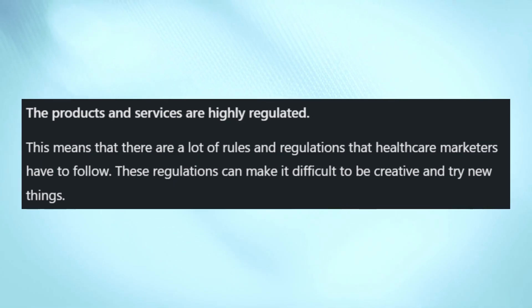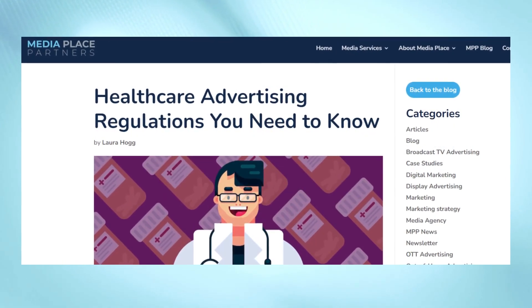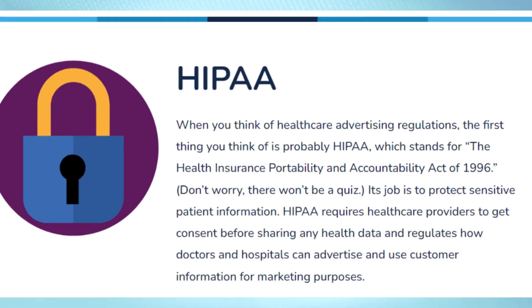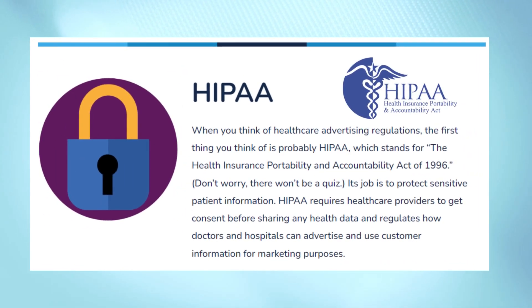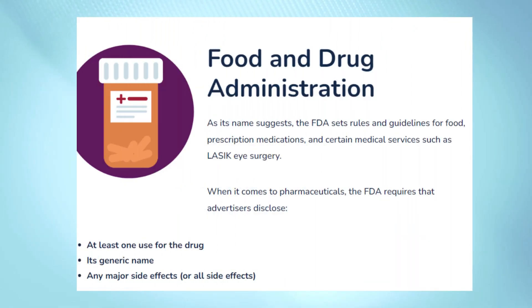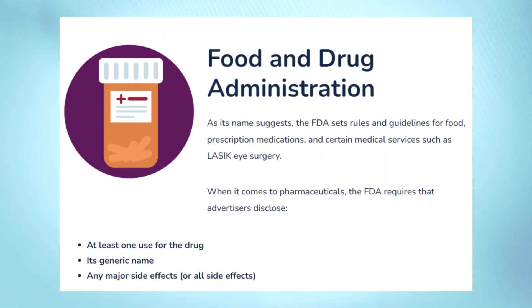There are a lot of rules and regulations that healthcare marketers have to follow. There's a guide from Media Place Partners that goes over the healthcare advertising regulations. They include HIPAA guidelines, which are about protecting confidential patient information. HIPAA requires healthcare providers to get consent before sharing any health data, and regulates how doctors and hospitals can advertise and use customer information for marketing purposes. And there are rules on making advertisements for medications set in place by the FDA.